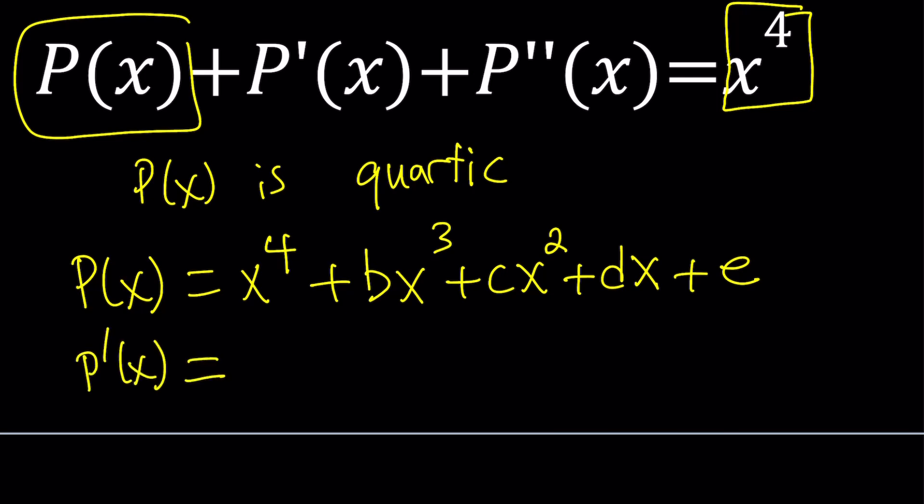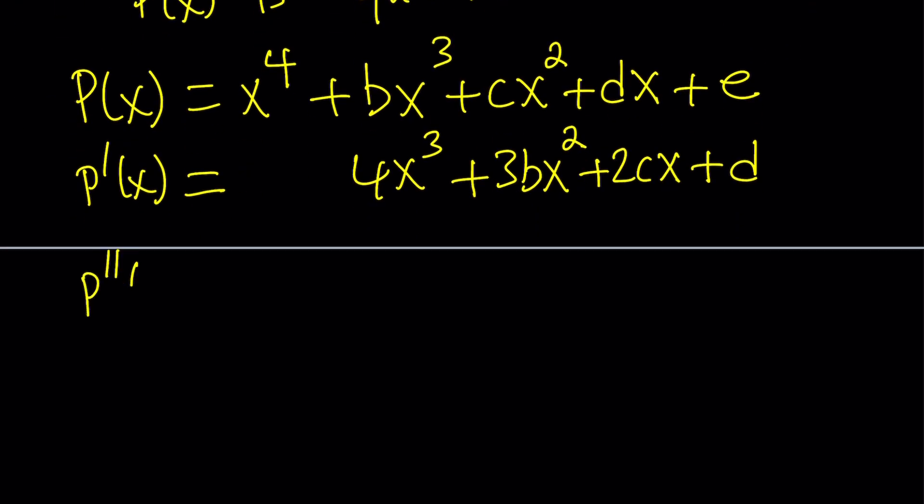When you differentiate X to the fourth, it becomes four X cubed. Let's align the like powers. When you differentiate B X cubed, it becomes three B X squared. And then when you differentiate C X squared, you get two C X. And finally, derivative of DX is just D. This is the first derivative. The second derivative is the derivative of the first derivative.